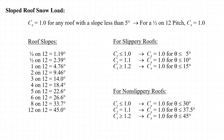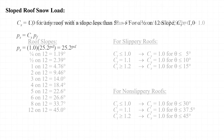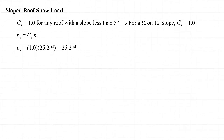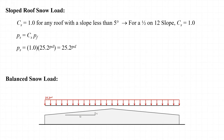For example, for a slippery roof with C sub T equal to 1.1, C sub S is equal to 1.0 if the roof slope theta is less than or equal to 10 degrees. So for our warehouse structure with a roof slope factor C sub S equal to 1.0 and a flat roof snow load P sub F equal to 25.2 psf, the sloped roof snow load P sub S is also 25.2 pounds per square foot, applied to the horizontal projection of the roof. This represents the balanced snow load for the structure.